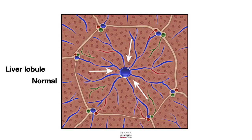Here is a normal liver lobule. You have portal triads consisting of a portal vein, hepatic artery, and hepatic ducts. Blood flow from the portal vein reaches the central vein via sinusoids. From the central vein, it goes into the hepatic vein branches, and finally into the hepatic veins and inferior vena cava.